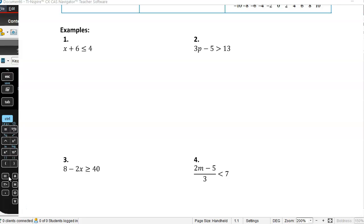I've got x plus 6 is less than or equal to 4. I'm going to take 6 from either side. So x is less than or equal to negative 2. That's your solution. That gives you your range of answers.